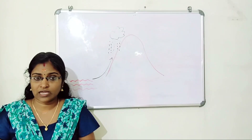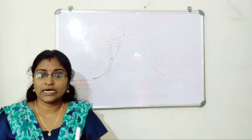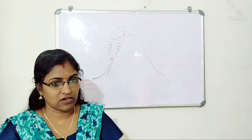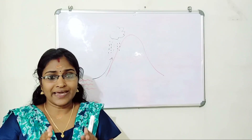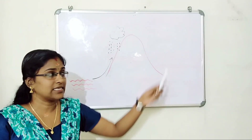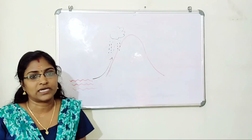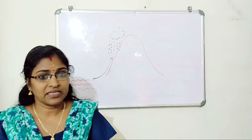The place situated on the leeward side of the mountain range is called a rain shadow region — it does not receive rainfall.